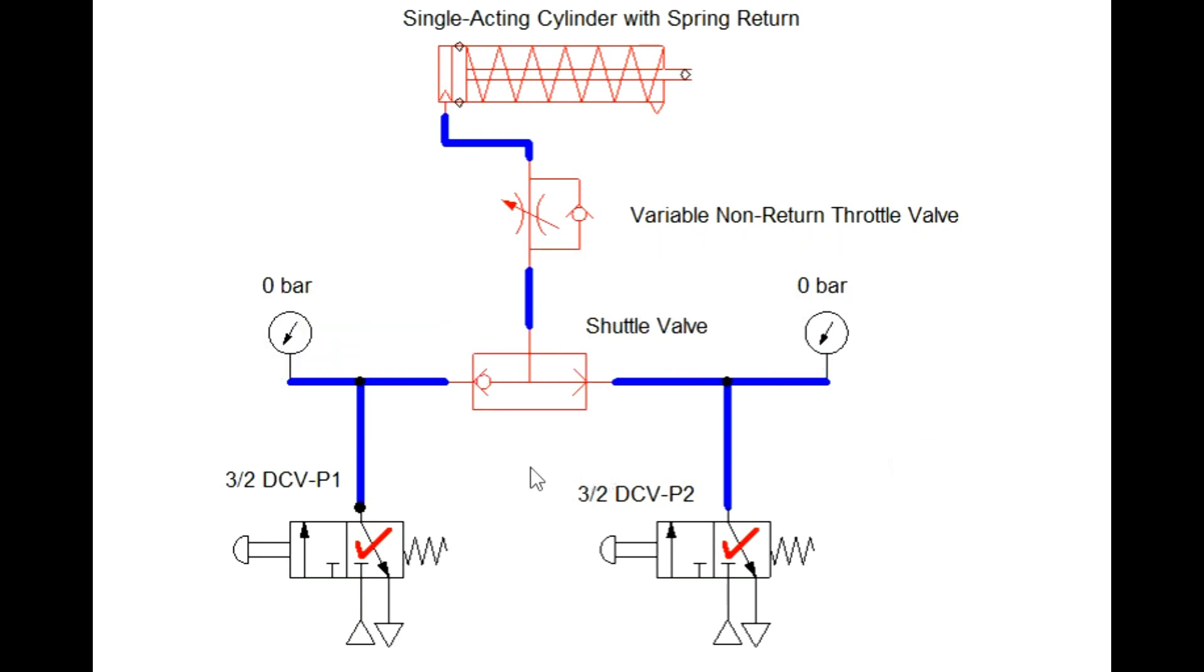First of all, see the construction of the circuit. It consists of two direction control valves which are connected to the shuttle valve. These are the pressure ports and exhaust port. The shuttle valve outlet is connected to the single acting cylinder through the flow control valve.